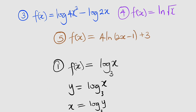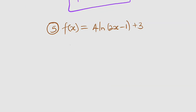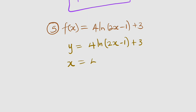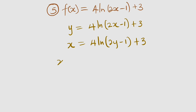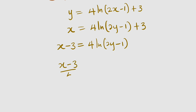Now let us take the last problem. Our last problem is f of x equal to 4 multiplied by the natural log of 2x minus 1, plus 3. Let us replace f of x with y. So we have y equal to 4 multiplied by the natural log of 2x minus 1, all plus 3. Now let us switch x and y. We have x equal to 4 multiplied by the natural log of 2y minus 1, plus 3. Now we solve for y. Let us subtract 3 from both sides. We have x minus 3 equal to 4 multiplied by the natural log of 2y minus 1. Now let us divide both sides by 4. We have x minus 3 divided by 4 equal to the natural log of 2y minus 1.